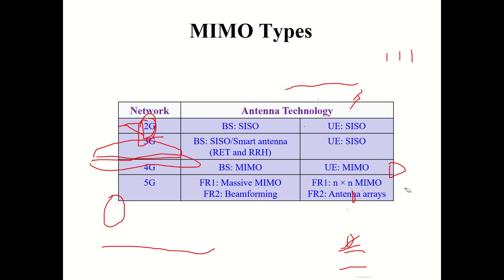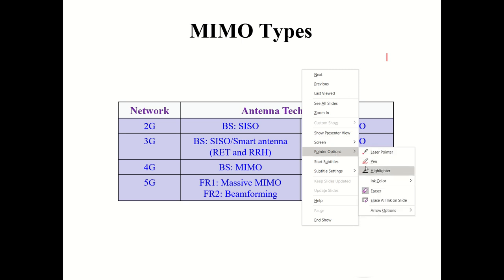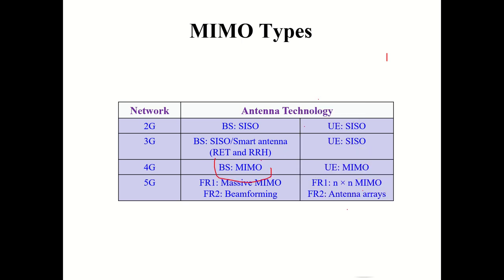In terms of how antenna technology evolved across cellular generations: 2G had SISO; 3G also primarily SISO with some smartness introduced; 4G introduced MIMO for the first time; 5G has Massive MIMO combined with beamforming using phased arrays. In 5G base stations, thousands of antenna elements are present because each MIMO element is itself an array — combined, you get thousands of elements implementing configurations from 4x4 up to 32x32 MIMO.